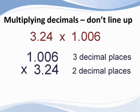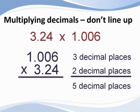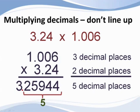Therefore, when we have found the product of the numbers—three, two, five, nine, four, four—we need to place the decimal point so that there are five decimal places.